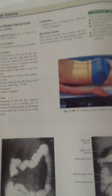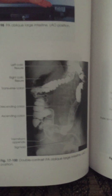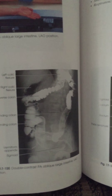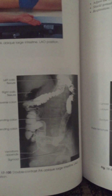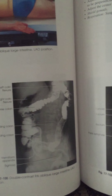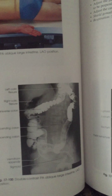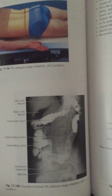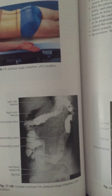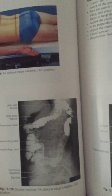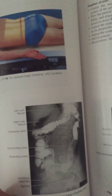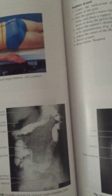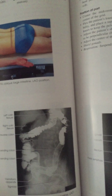Next I did the LAO position. Here you want evidence of proper collimation, the entire colon visible, and the left colic flexure less superimposed or open compared with the PA projection. You want full visibility of the descending colon and an exposure technique that shows the anatomy.